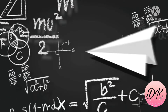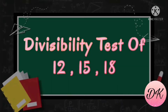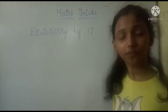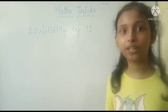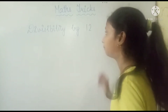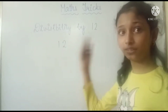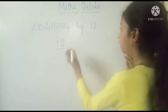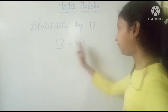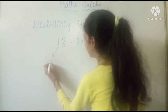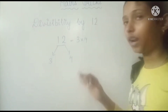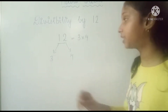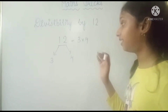Let's start with divisibility by 12. The trick is very simple, but for that you need to know about the divisibility of 3 and 4. So 12 is equal to 3 multiplied by 4. Whenever a number comes in front of you and you have to check divisibility by 12, you have to first check if the number is divisible by both 3 and 4.